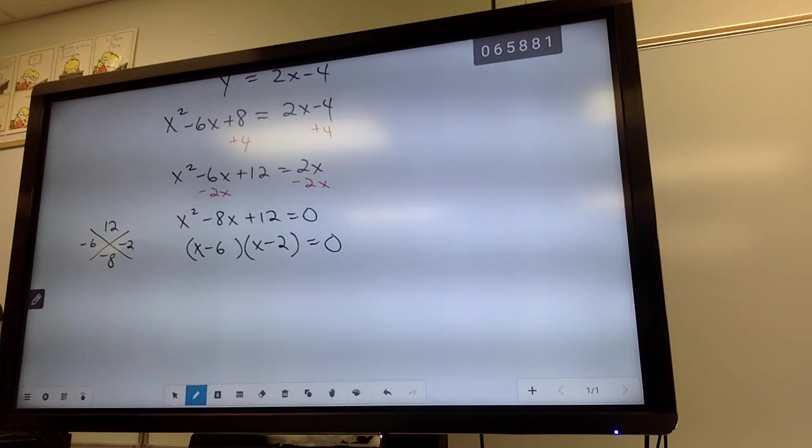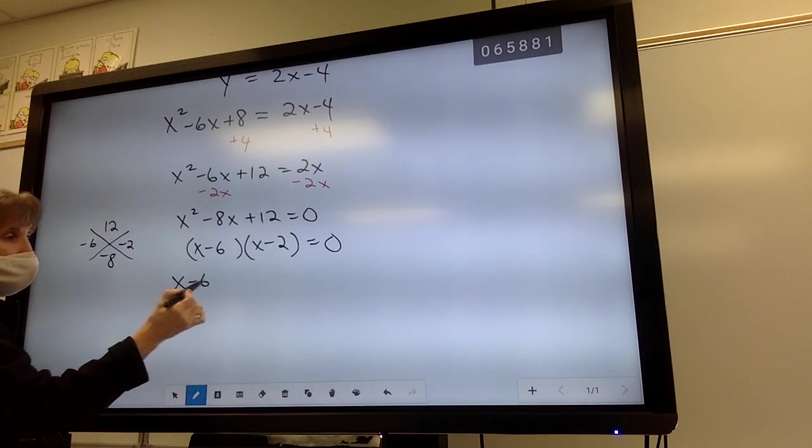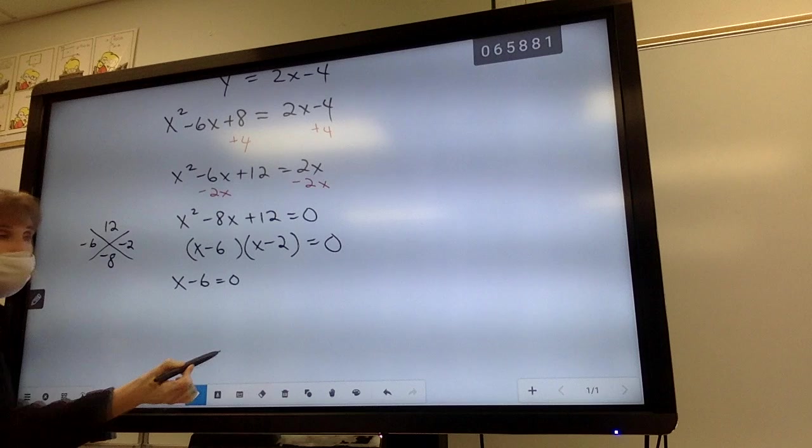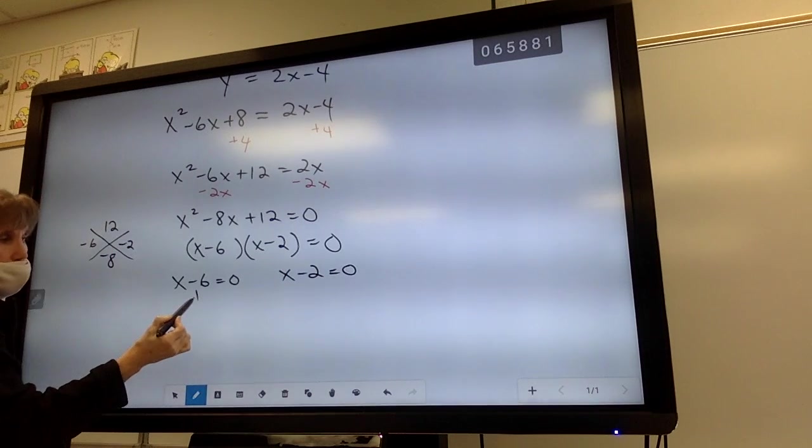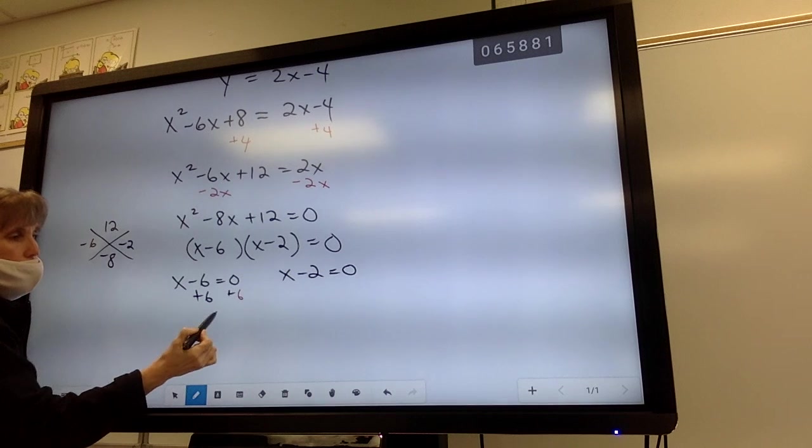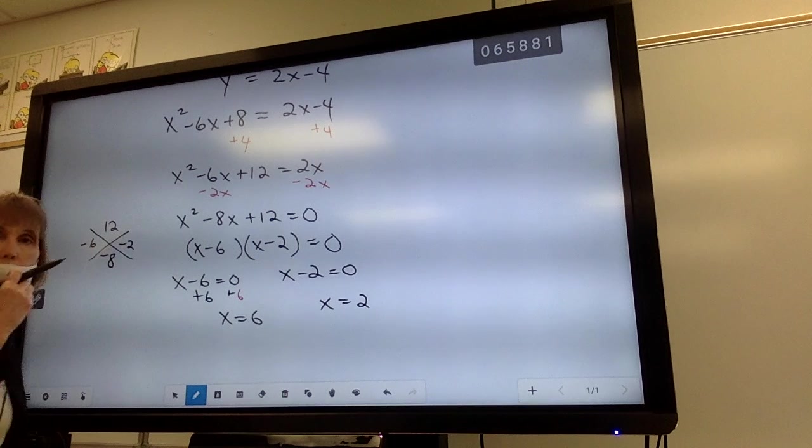So Cassie, this is what I want to talk to you about. Once you get it factored like this, you're setting your factors equal to 0. And I'm going to do all this as a thing. I realize that. Okay. And that means I have to add 6. So one of my answers is positive 6, and the other answer would be positive 2.